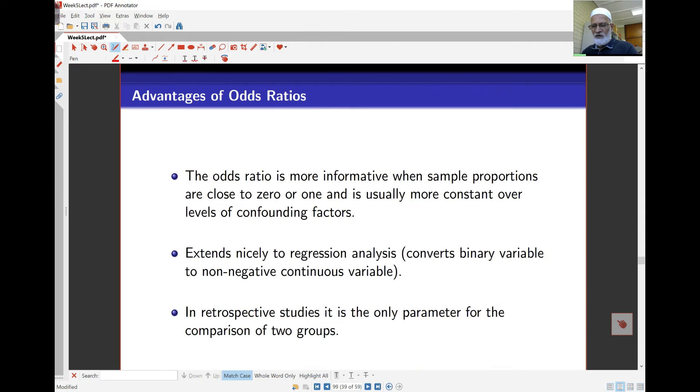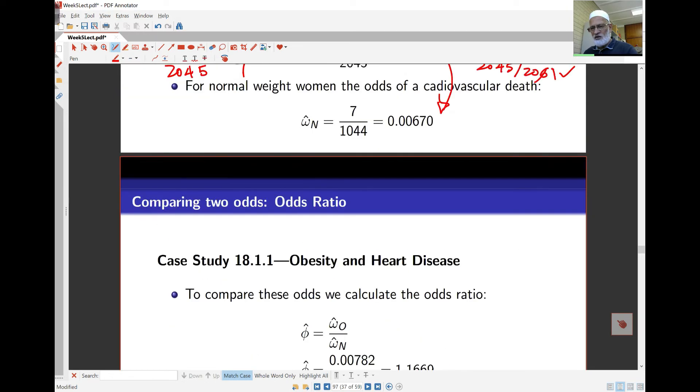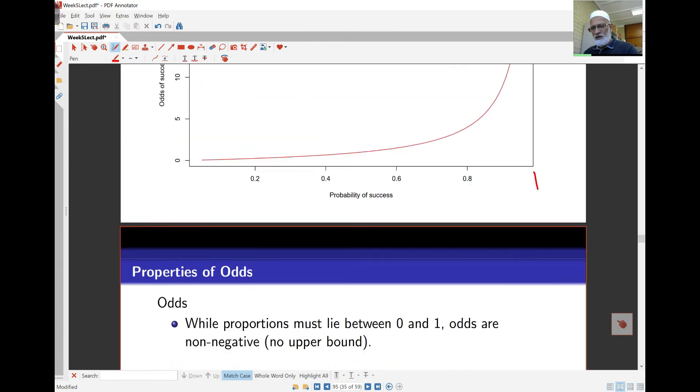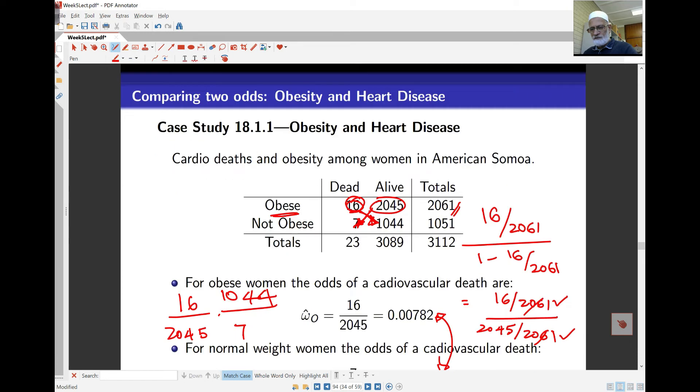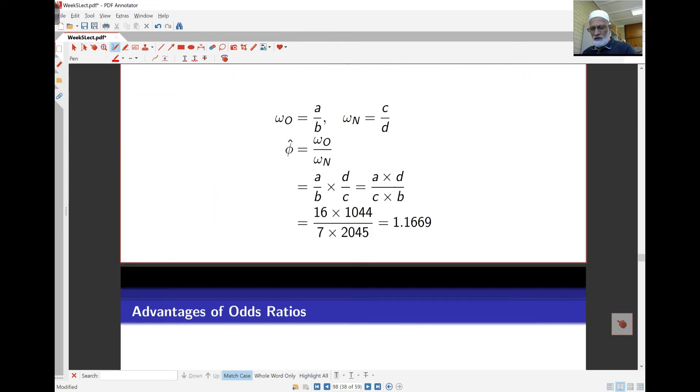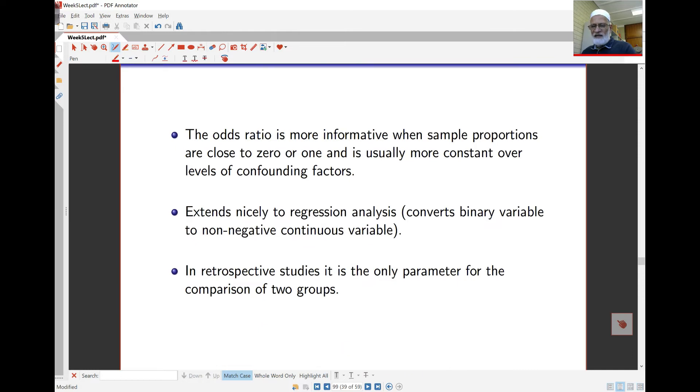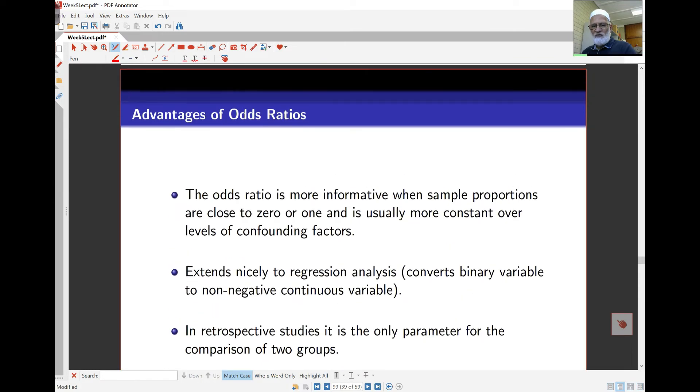Now the odds ratio is more informative when sample proportions are close to zero, because we know that if it's proportions close to zero, then a small difference means quite a bit there. But odds ratio essentially will not be a problem even when we are at the ends of probabilities, either zero or one. This is usually more constant over levels of confining factors. You'll find, if you look at the odds ratio and how it changes, from the graph here, it's quite flat for quite a while and then suddenly it takes off.